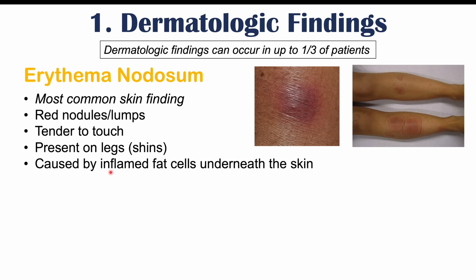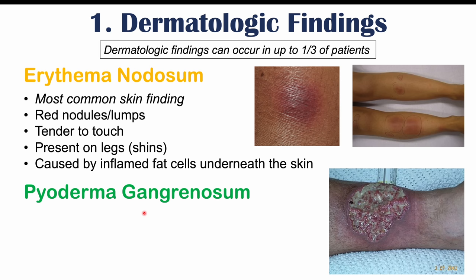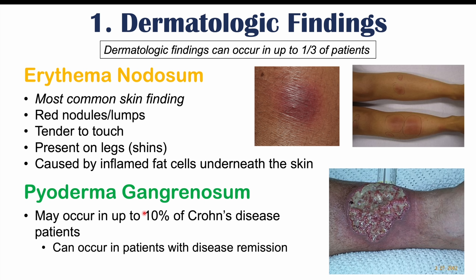Another potential skin finding in Crohn's disease patients is pyoderma gangrenosum. This skin condition can occur in up to 10% of Crohn's disease patients, and it can occur even during disease remission — so even when the patient's gastrointestinal symptoms are in remission, they can still have this skin finding. The cause is not entirely known.